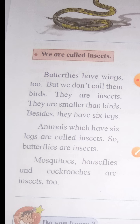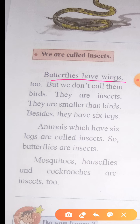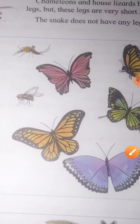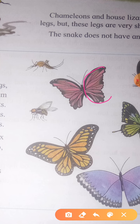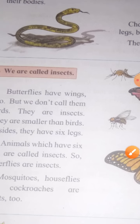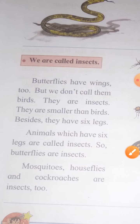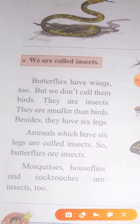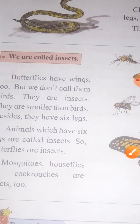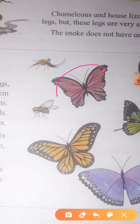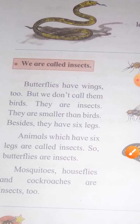Insects have wings too, but we don't call them birds. Butterflies have wings, but we don't call them birds. They are insects, and they are smaller than birds.